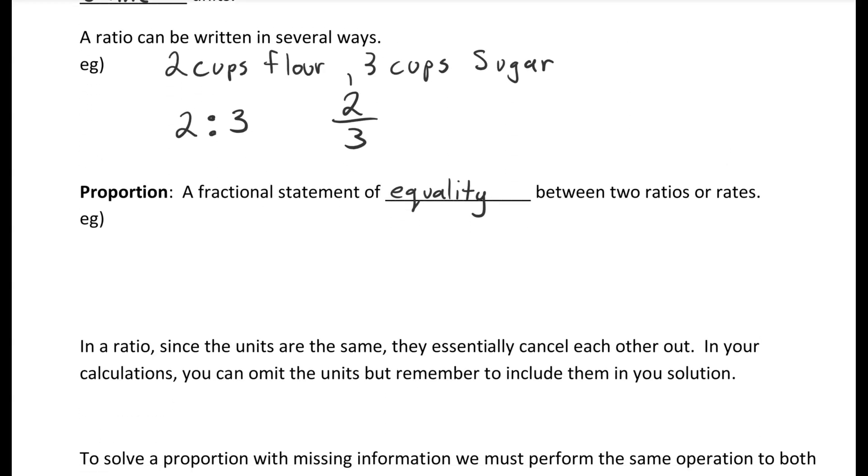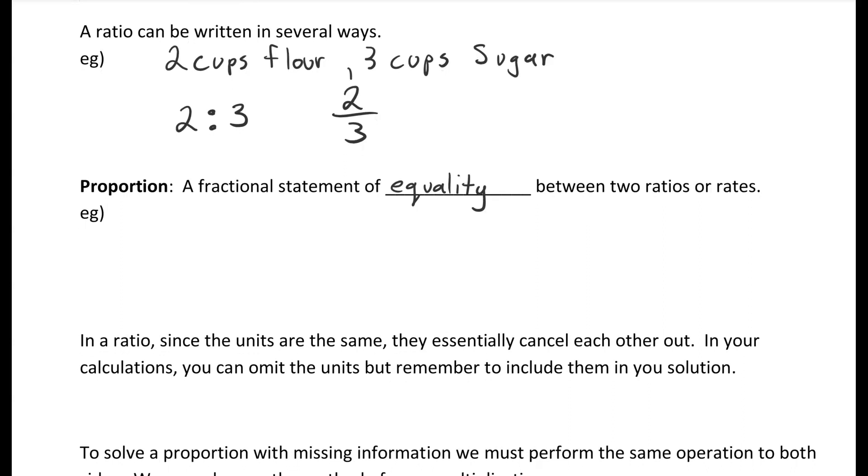The next term we want to look at is proportion. This is a fractional statement of equality between two ratios or rates. An example would be two over three equals twenty over thirty, which also equals four over six. They all are equal to each other because two multiplied by ten gives you twenty, and three multiplied by ten gives you thirty.